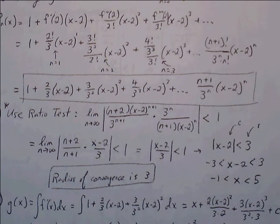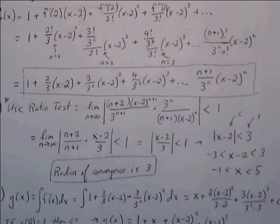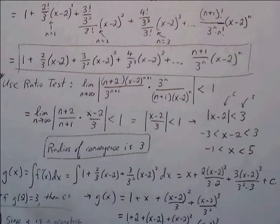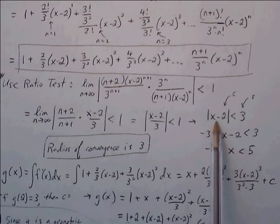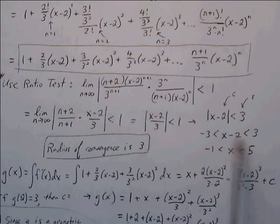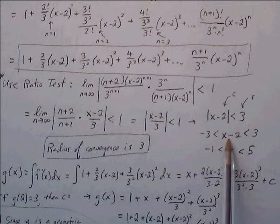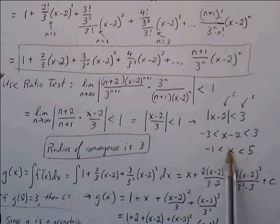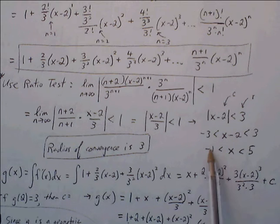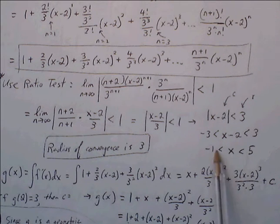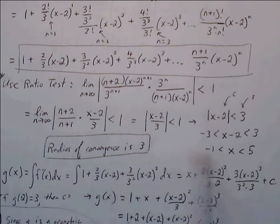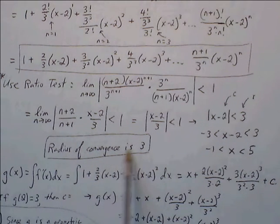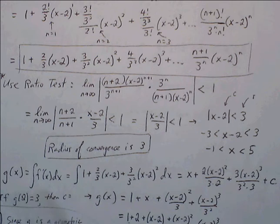Multiplying both sides by 3, we need |x−2| < 3. The center is 2 and the radius of convergence is 3. If we were to find the full interval of convergence, we'd get −1 < x < 5, but for this part we just need the radius of convergence, which is 3.